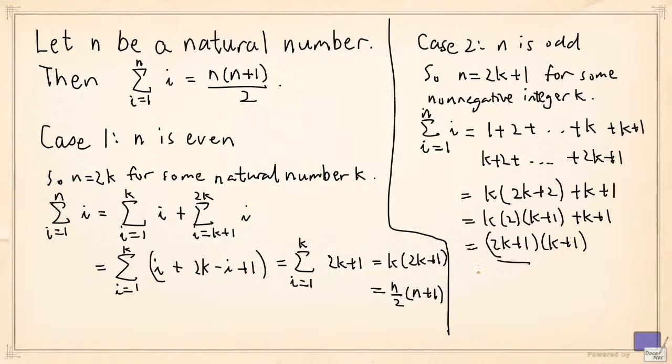Now this is just n. What about this? Well, if you multiply this by 2, you get 2k plus 2. And 2k plus 2 is precisely n plus 1. So this is just n plus 1 over 2. Again, this is precisely what we want to prove.